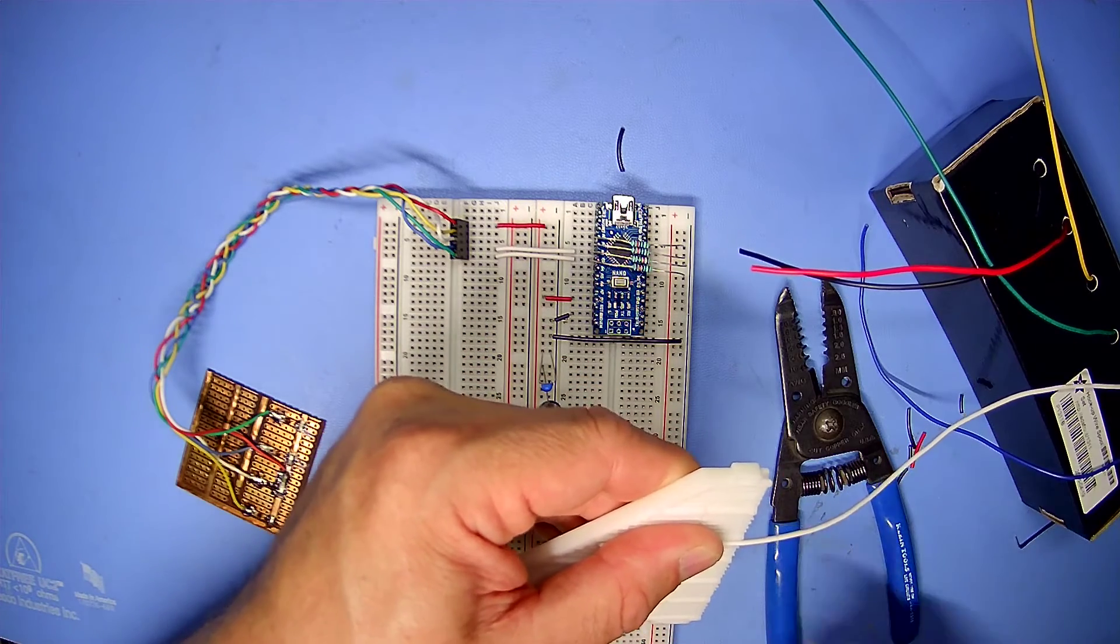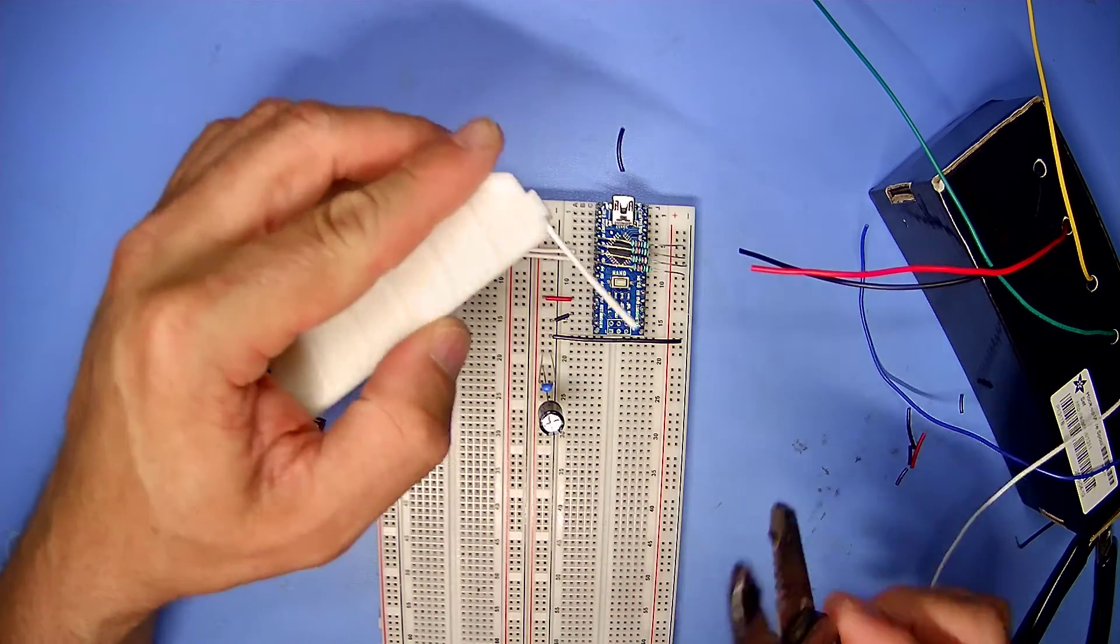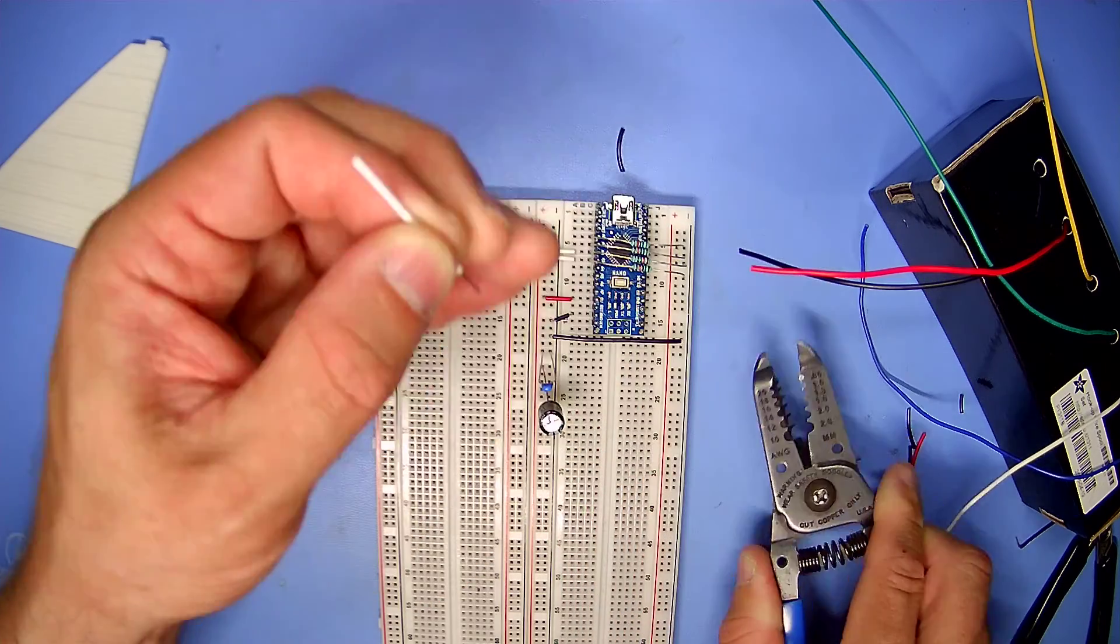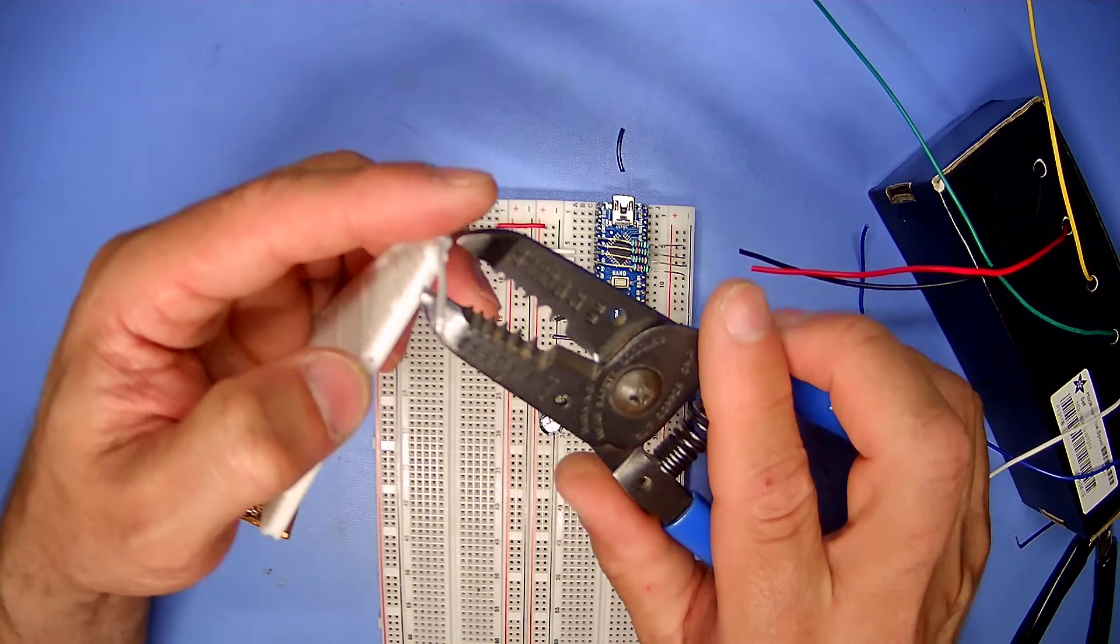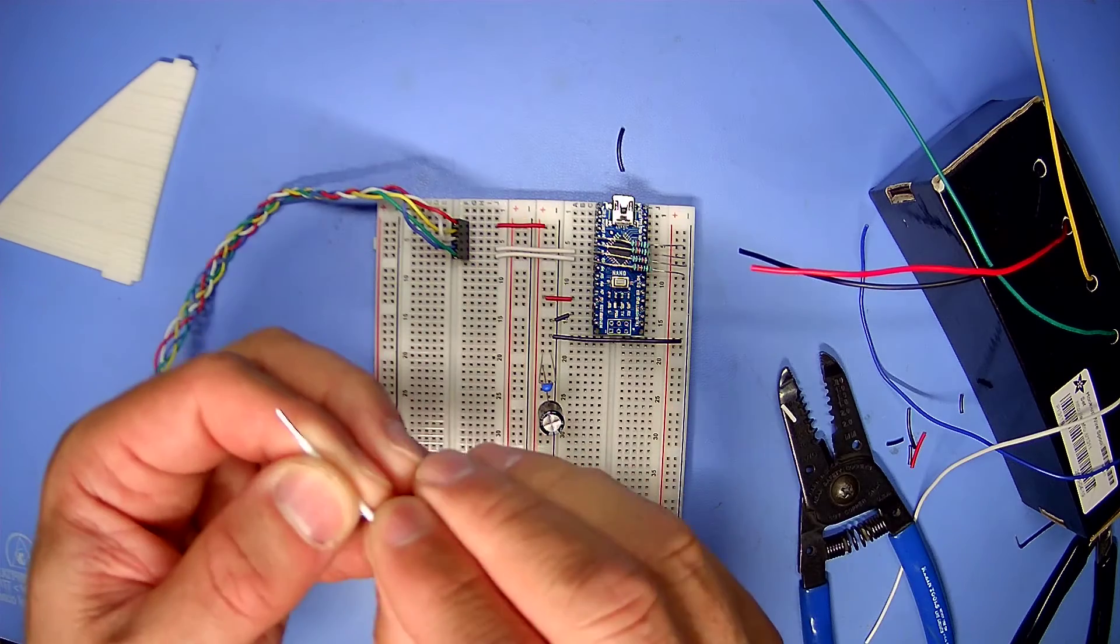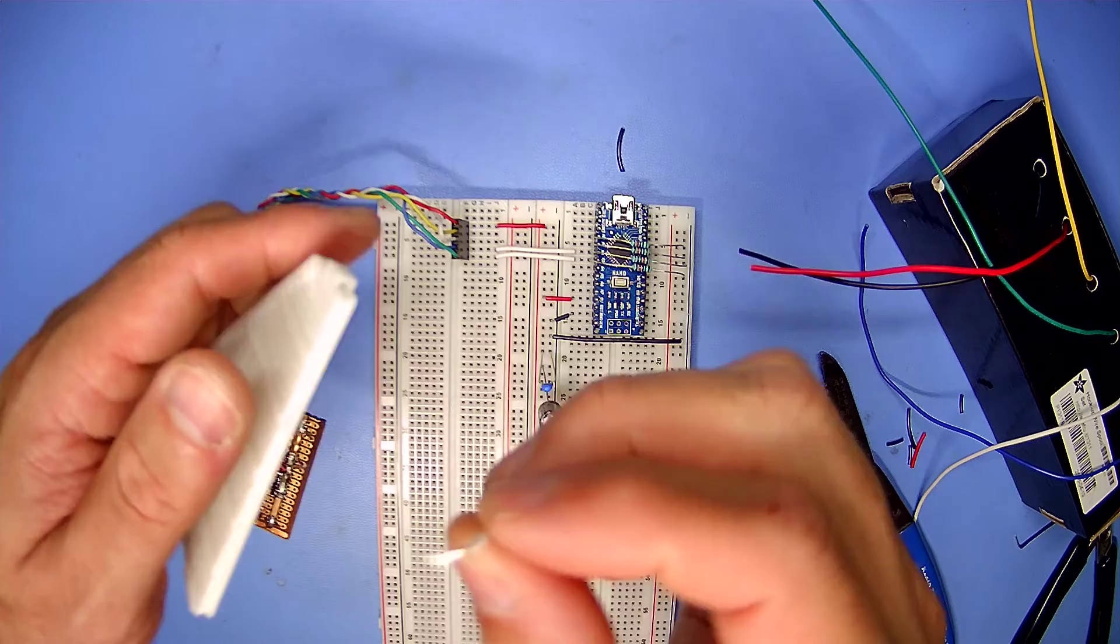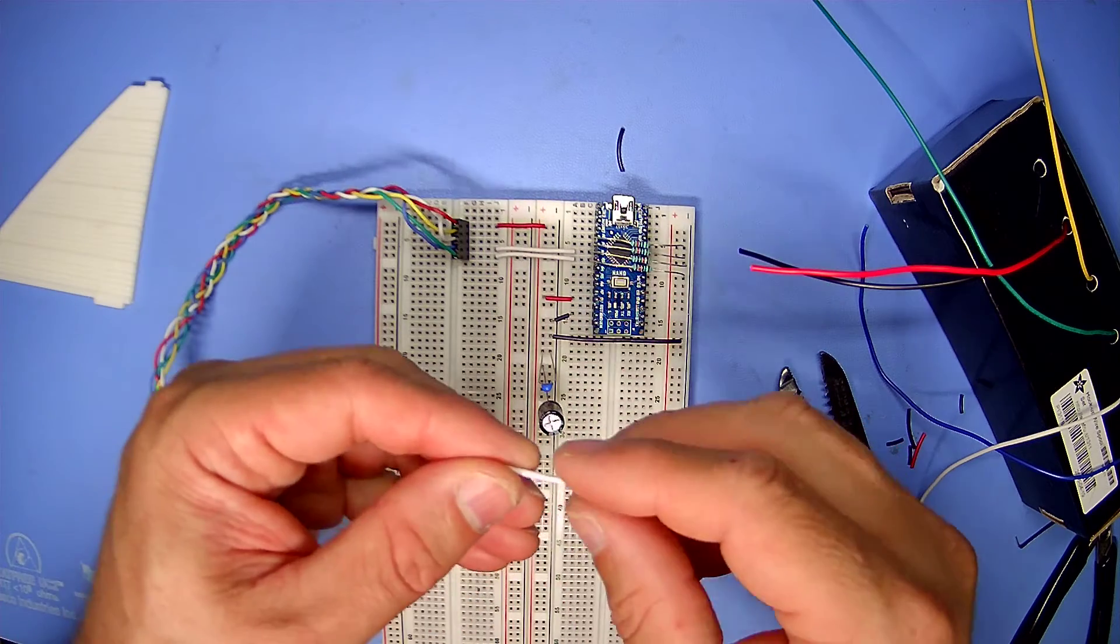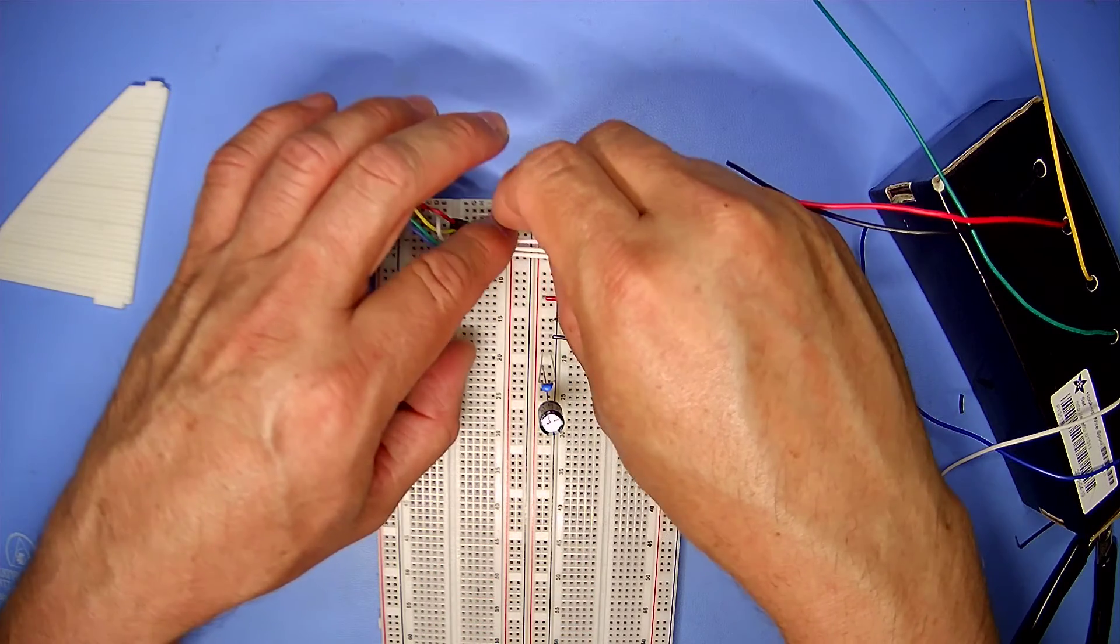So I just put my wire in there, I cut it, I strip, strip the other end, and then of course the bend and bend. And there's my matching jumper, and that's the same length.